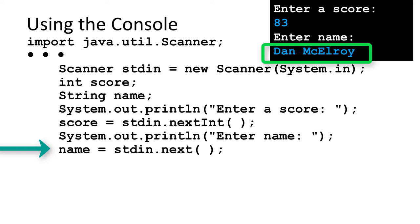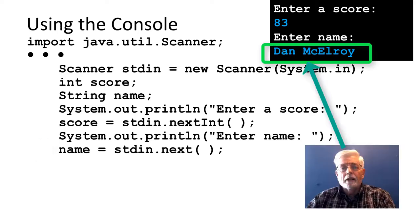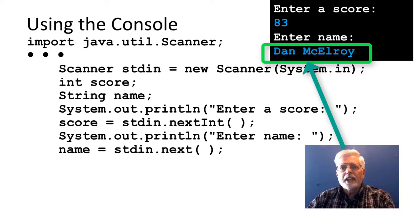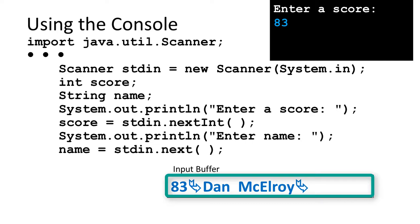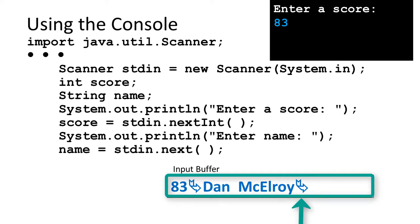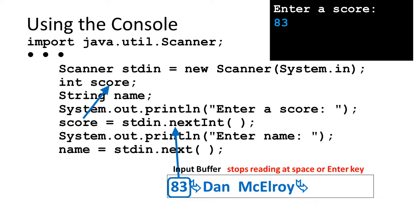The user entered the name Dan McElroy. Let's see what happens when using Scanner. The data going to the input buffer is 83, then the code for the enter key, then the characters for the name, and again the enter key. stdin.nextInt() skips over any leading whitespace characters such as space, tab, or the enter key code that may be in the input buffer.